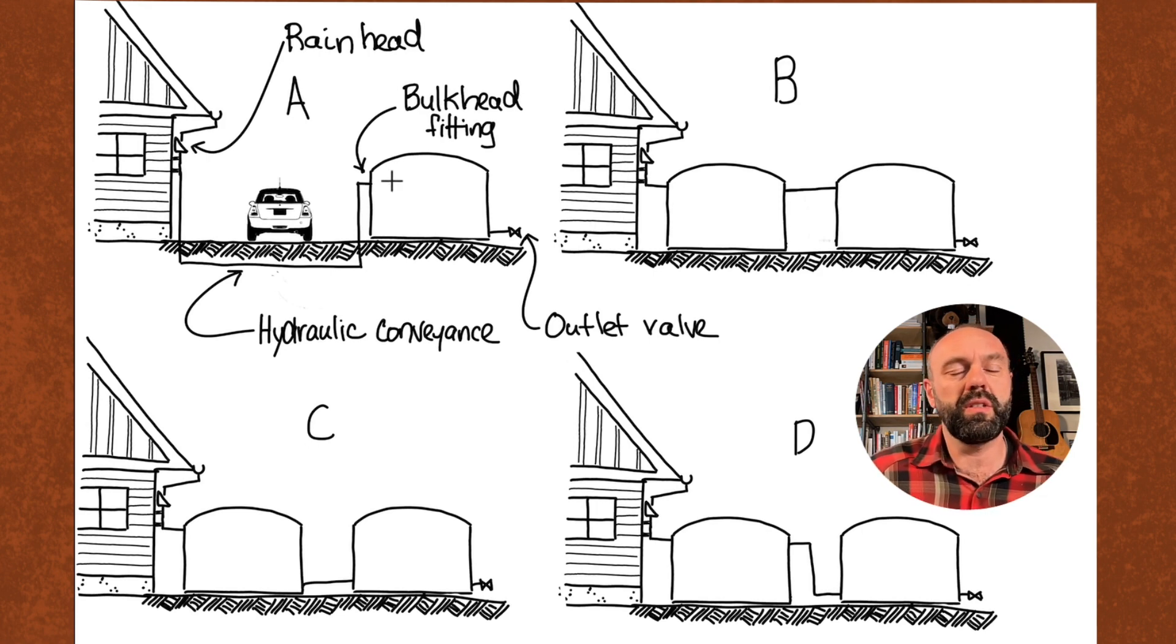The reason that you might want to use hydraulic conveyance is because maybe you've got a driveway in between and you want to get the water from the house to the rain tank, but you don't want to have an overhead pipeline connecting the rain head to the rain tank and limiting what kind of vehicle can go through this space.